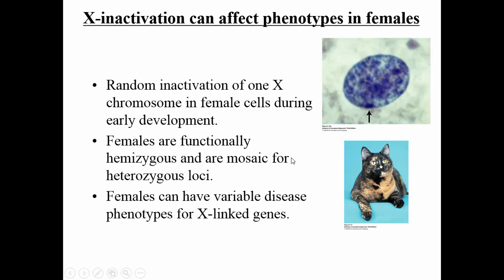Different cells in an organism's body can have different Xs inactivated. You can see this in calico cats — the female ones at least — which have different patches of fur with different pigmentation. There are many diseases that can be inherited on the X chromosome. If a female has them, you could see more variability in the disease because one of the Xs could be inactivated and one might not be, adding to variability. Here you can see an actual X-inactivated chromosome, something called a Barr body.